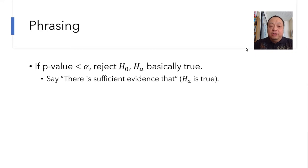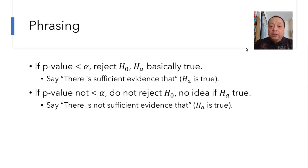If you reject H0, then you say, quote, there is sufficient evidence that HA is true. That takes care of the uncertainty. And then if you do not reject H0, then you say, quote, there is not sufficient evidence that HA is true. Same uncertainty is included.